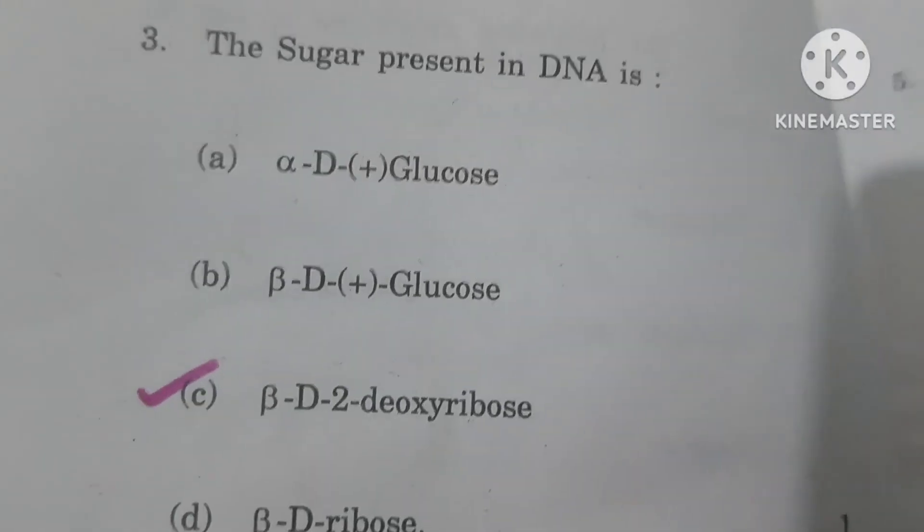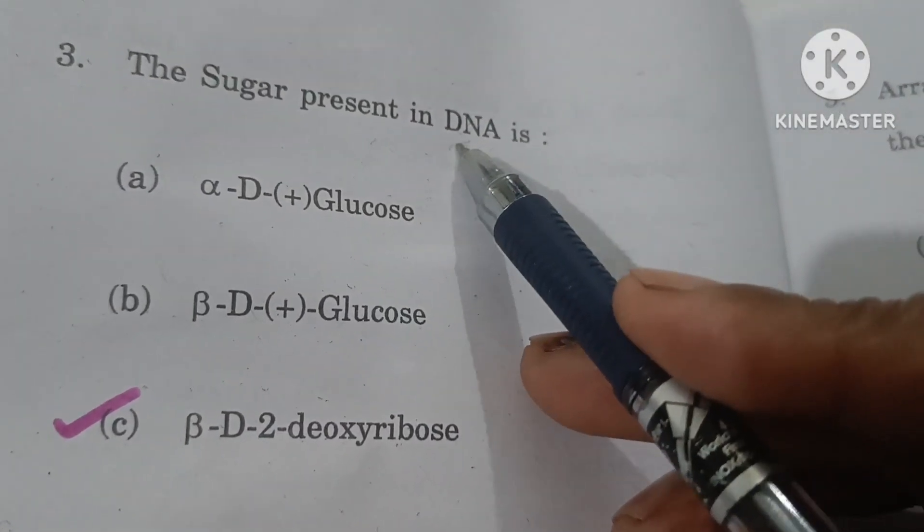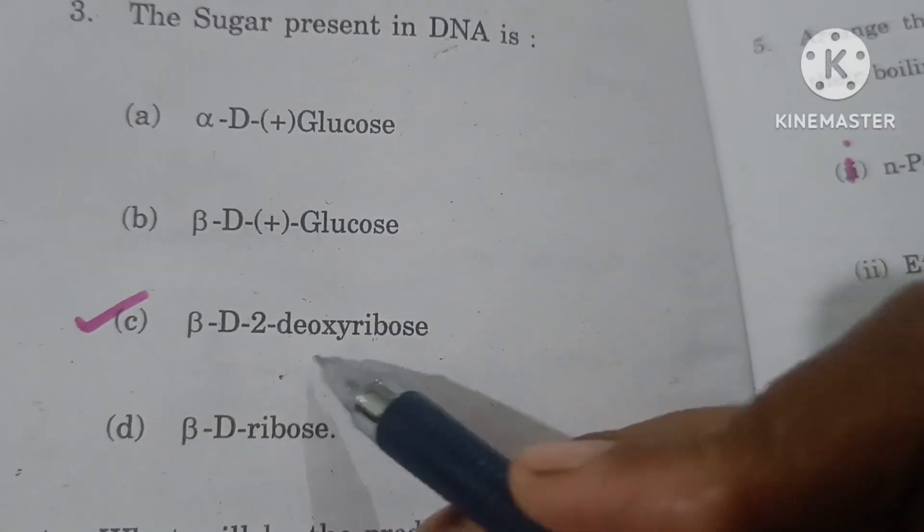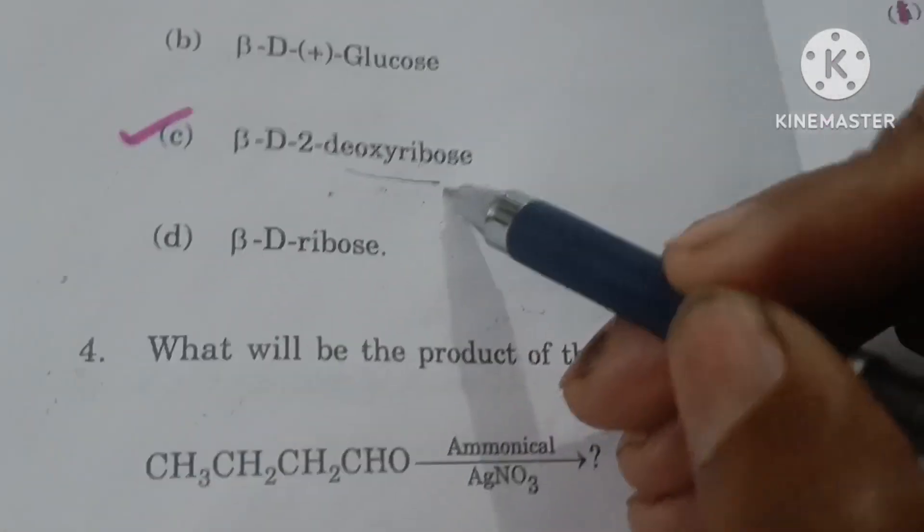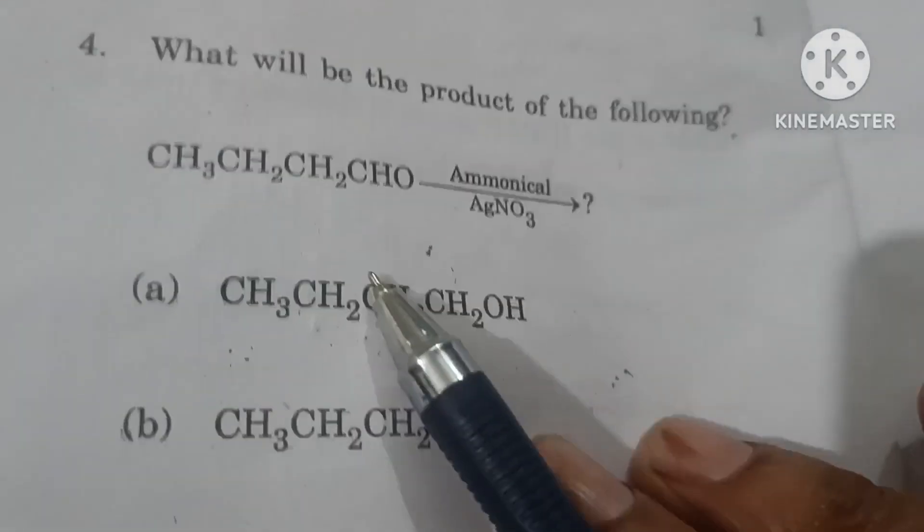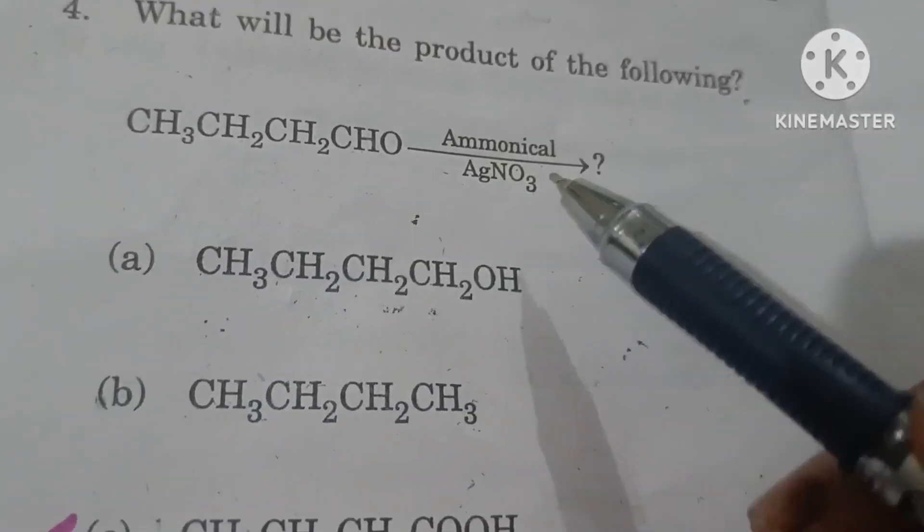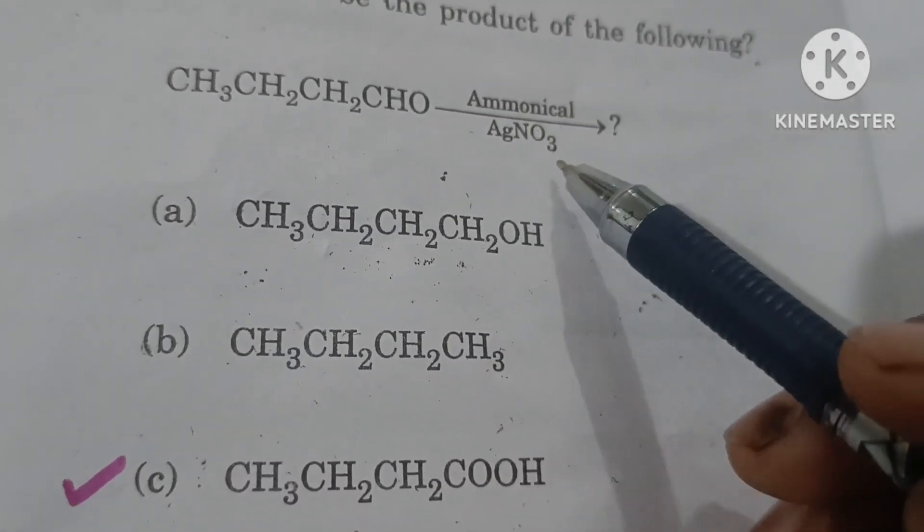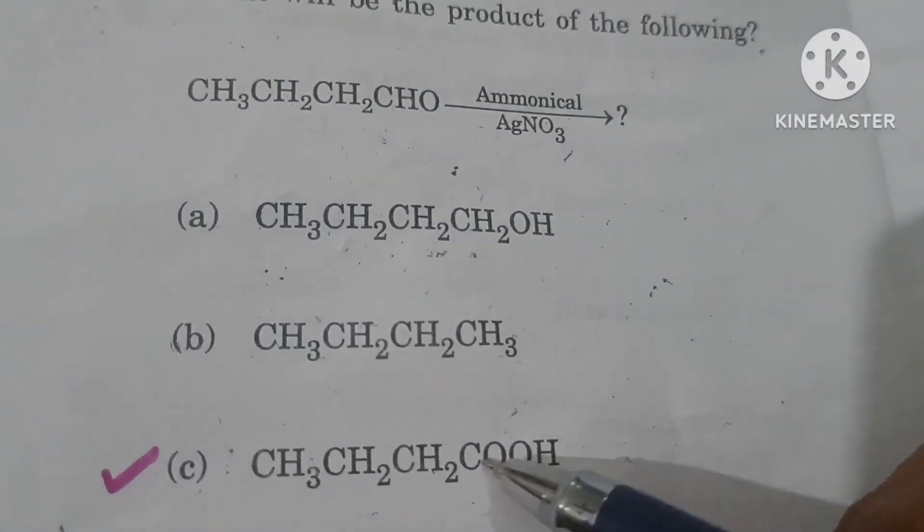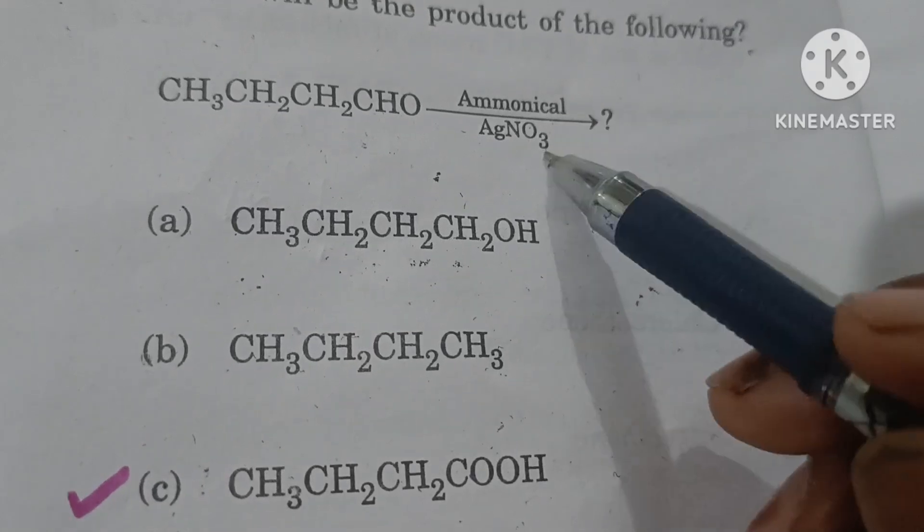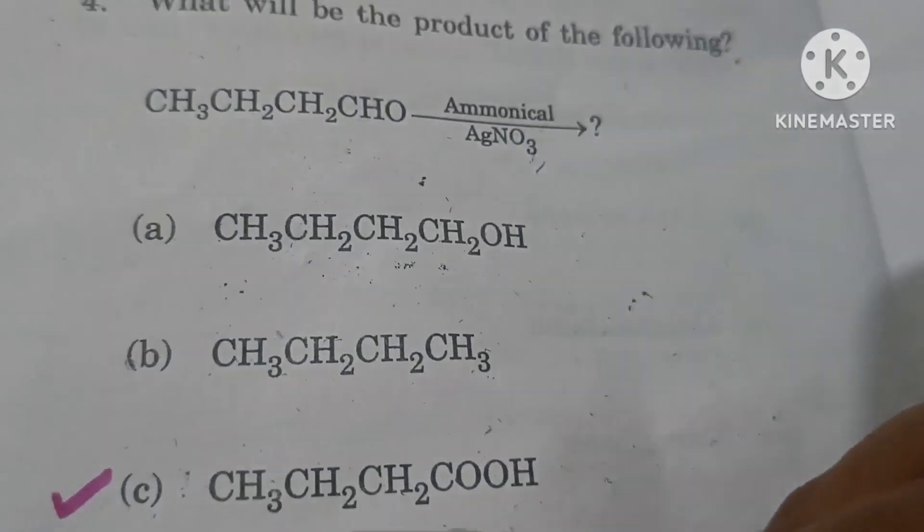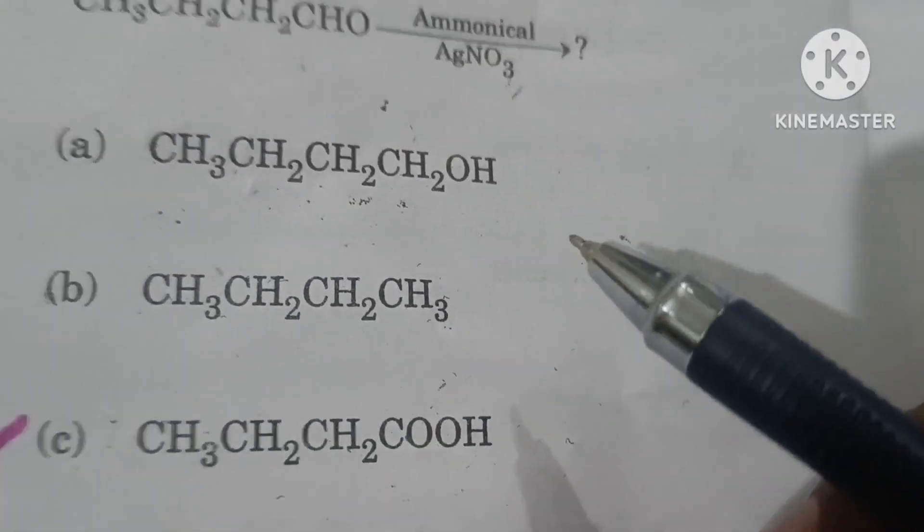The sugar present in DNA, as the name suggests deoxyribose nucleic acid, so the answer is beta-D-2-deoxyribose. What will be the product of the following? When we react aldehyde with Tollens reagent, ammoniacal silver nitrate, the aldehyde oxidizes and the Tollens reagent reduces into a silver mirror. So option C is your correct answer.